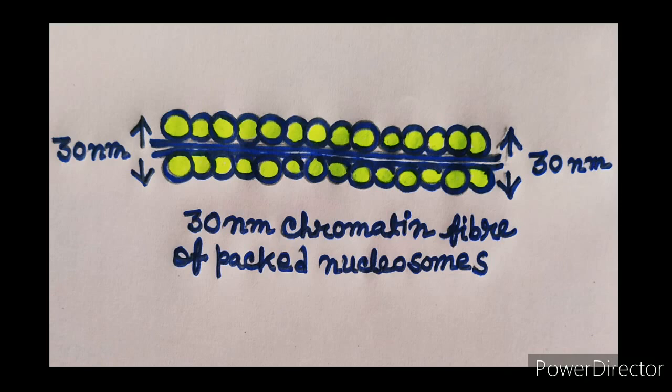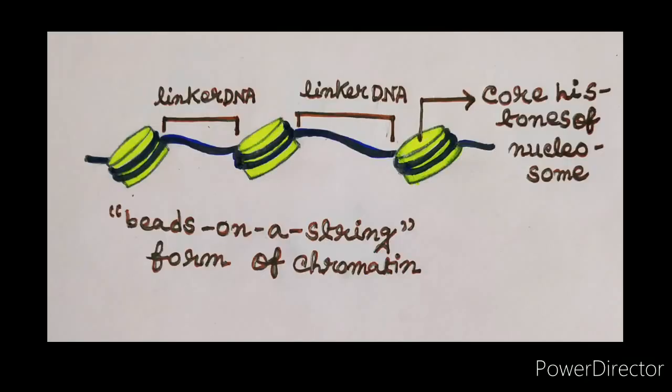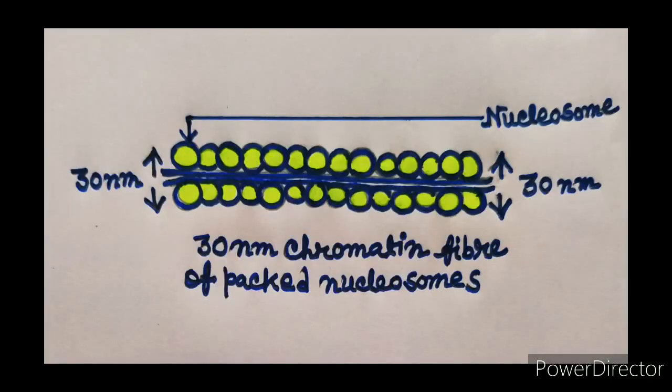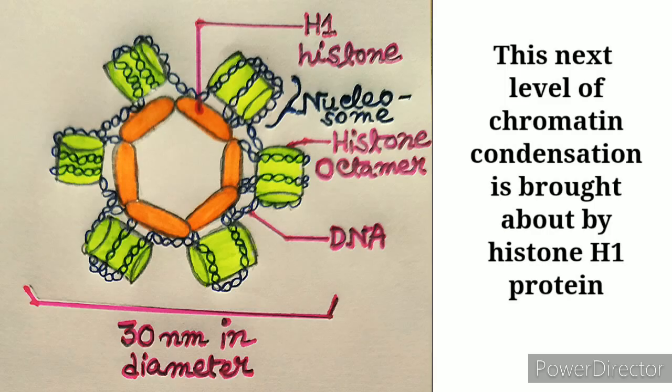This structure is more condensed than the beads on string structure of chromatin. This next level of chromatin condensation is brought about by histone H1 protein.